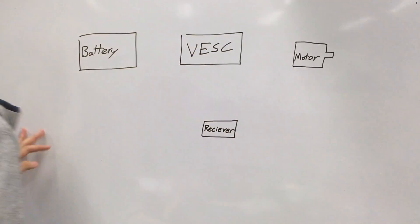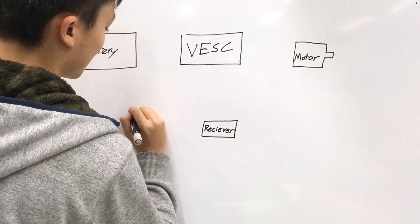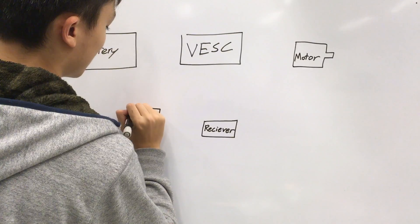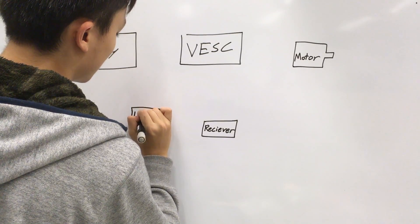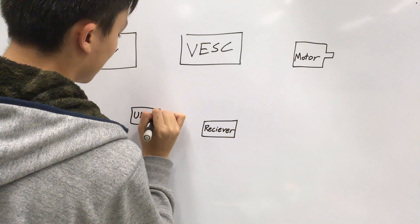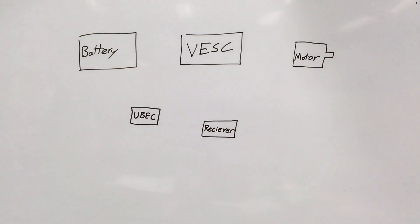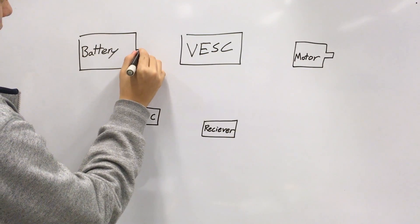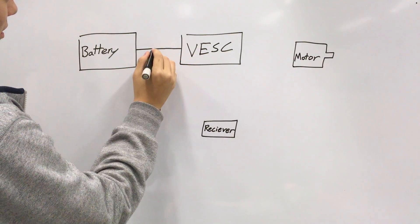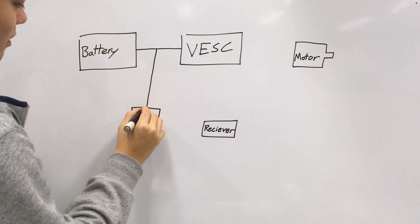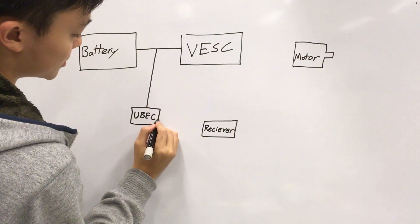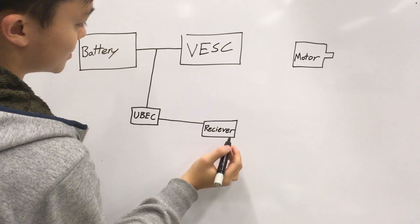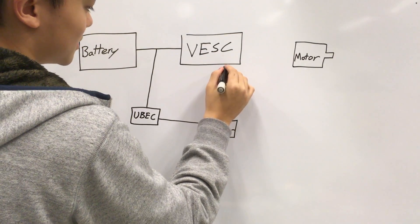Now as you can see, the U-BEC, which is the U-BEC, is basically just a small component that powers your receiver. Sometimes your receiver does not need a device like this to power your receiver. Sometimes it has its own power that can be drawn from the VESC. But in my case there wasn't, so I had to get an extra U-BEC, which you have to make sure that it can fit your battery rating.